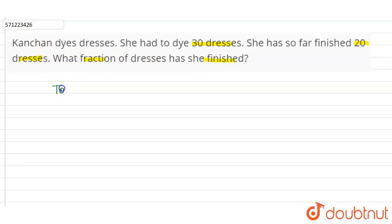So total work she had to do - total work she had to do is she has to dye 30 dresses, right? 30 dresses. And she has completed...